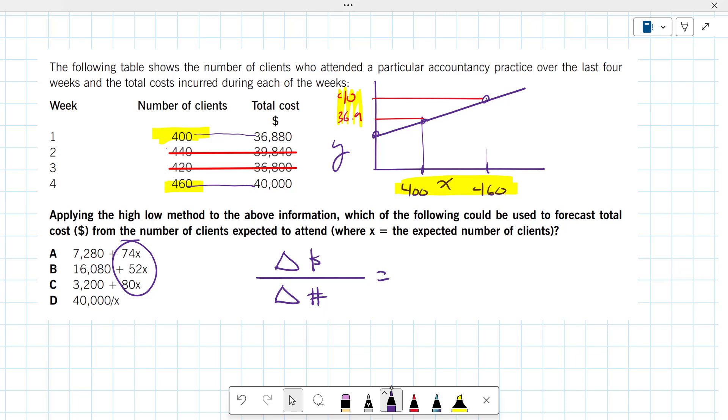And we have the change in units. That's 60, right, 460 minus 400. And then we can do the 40,000 minus the 36,880. And I've got a 3,120. So when the clients increase 60, we have a total cost increase of 3,120. So now we can get a variable cost per unit of 52.